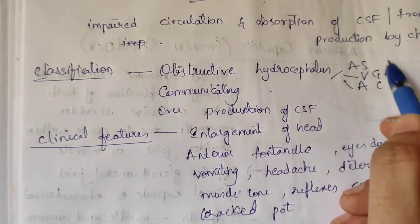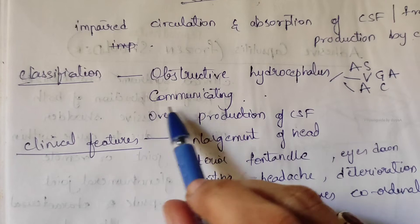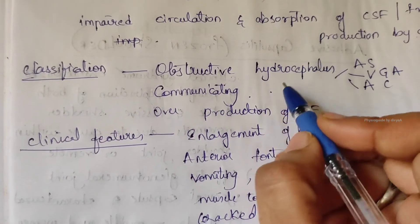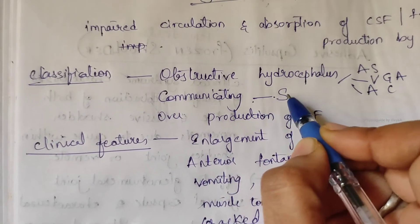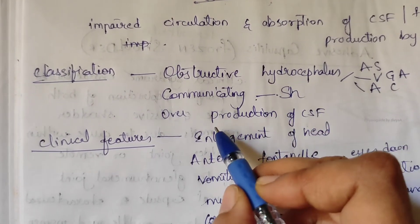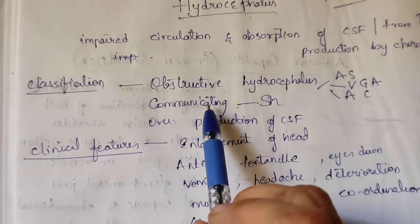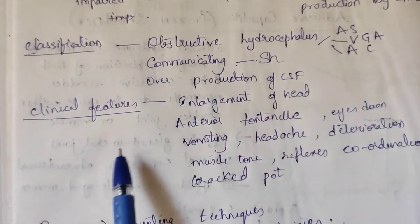Next, communicating hydrocephalus, which most commonly follows subarachnoid hemorrhage. Next, overproduction of cerebrospinal fluid. These are classified into three types.